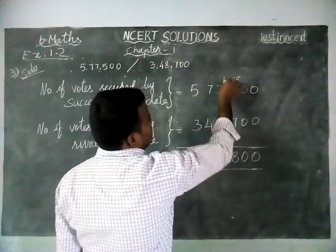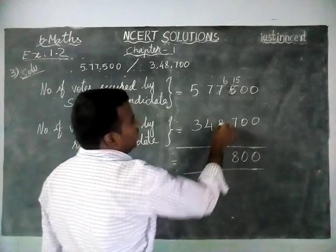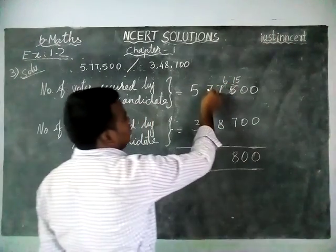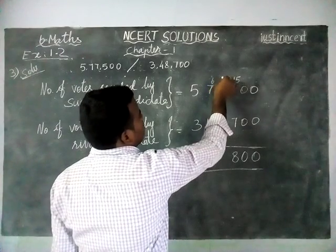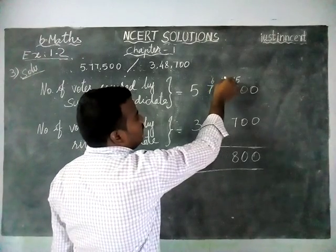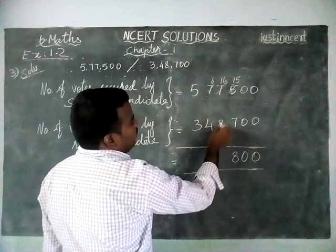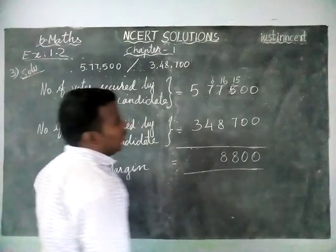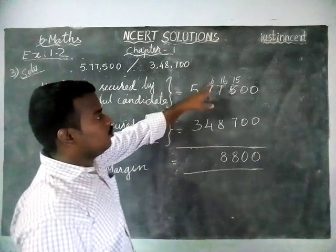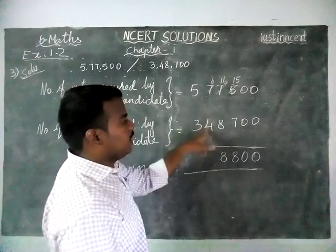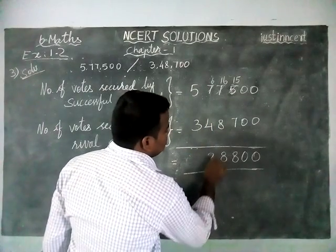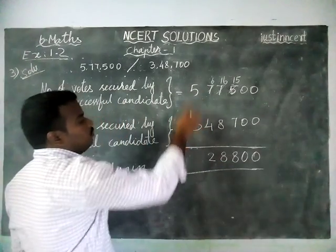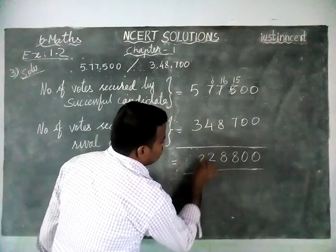And now this is only 6. In 6, 8 is not subtractable, so we are borrowing from 7. This becomes 6, and now this is 16. In 16, 8 gone means remaining 8. And here we have only 6. And here, 6 minus 4 is equal to 2. And here, 5 minus 3 is equal to 2.